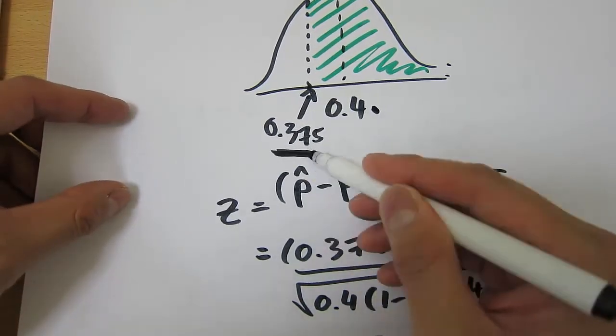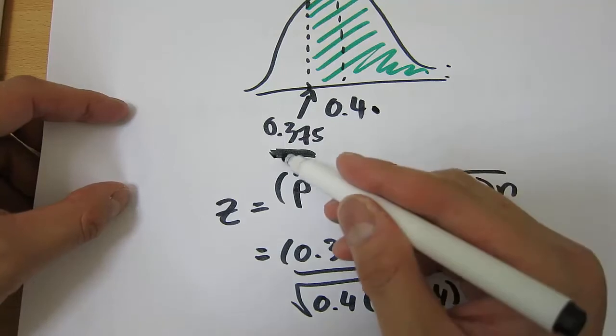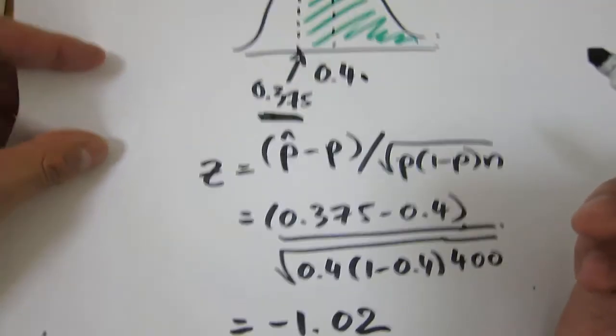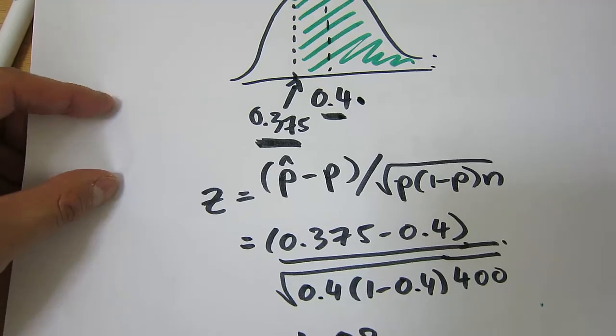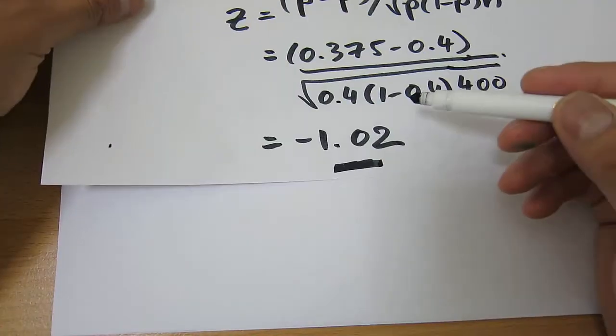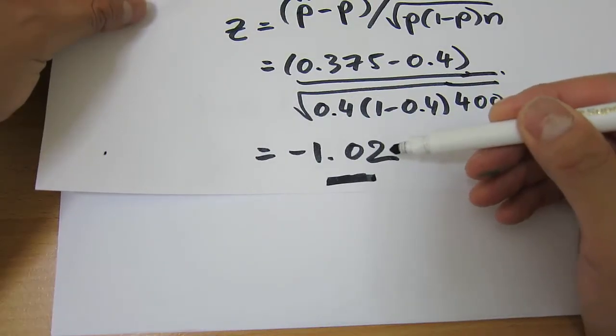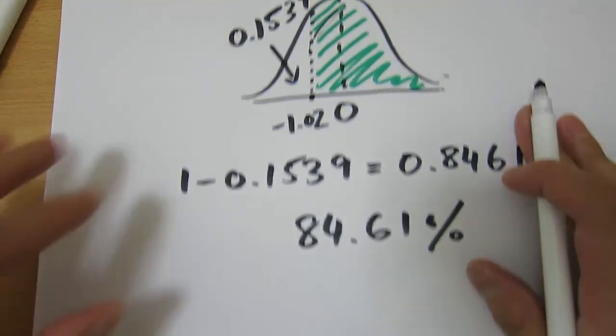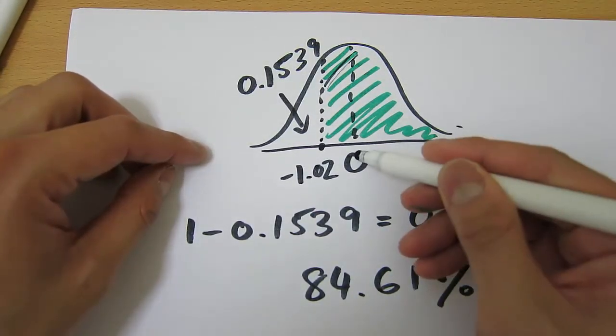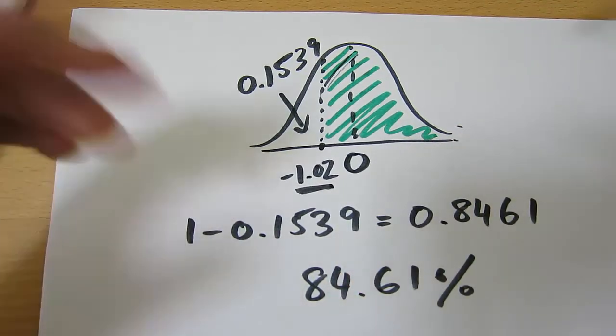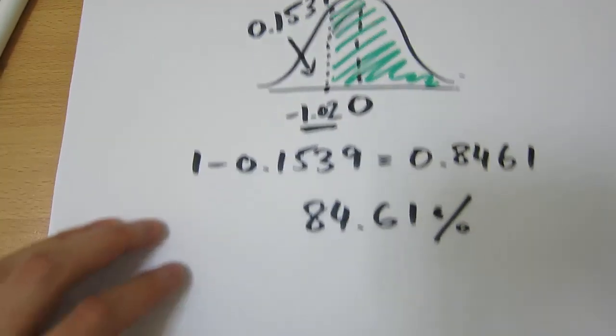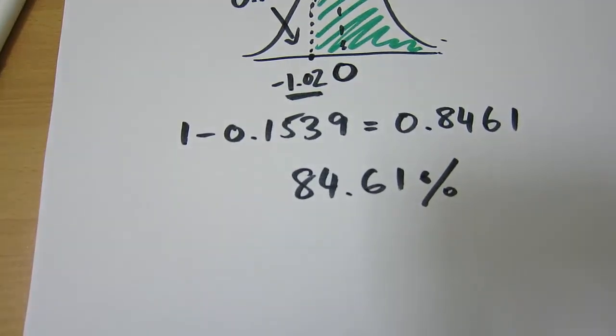To do that, we need to convert this sample statistic, this sample proportion, into a Z-score. This will convert to 0 in the standard normal distribution table, but we need to convert this using our Z-score, and we find it to be negative 1.02. Once we have negative 1.02, we draw that in our standard normal distribution table, the mean is 0, we know that's now negative 1.02, then we use our tables, and yada yada. I hope this helped.